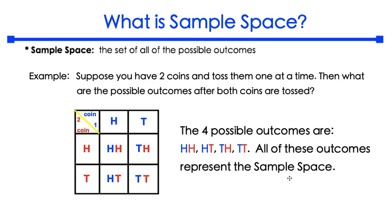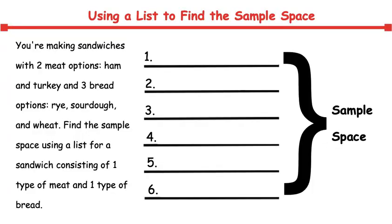Now let's take a look at another example to discuss about sample space. In this example we're going to be making a list to find the sample space. You're making sandwiches with two meat options, ham and turkey, and you're using three bread options, rye, sourdough and wheat. Find the sample space by using a list for the sandwiches that will contain one meat and one bread.